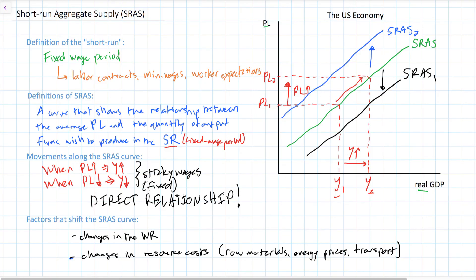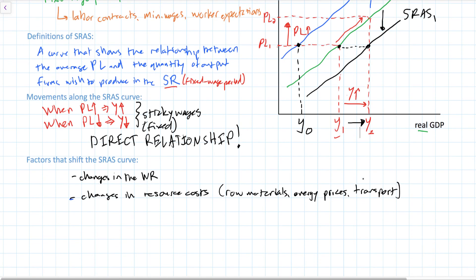Keep in mind that whenever short-run aggregate supply shifts, the quantity of output supplied at each price level changes. So at PL1, for example, a decrease in aggregate supply would result in a decrease in the quantity of real output supplied, while an increase in short-run aggregate supply would cause an increase in the quantity of output supplied. Firms would find it more profitable at lower resource costs to produce output, and less profitable at higher costs.